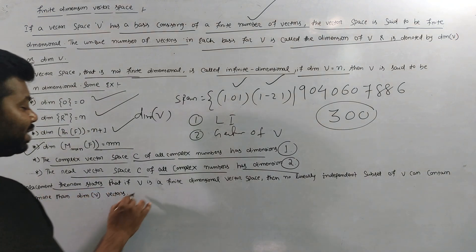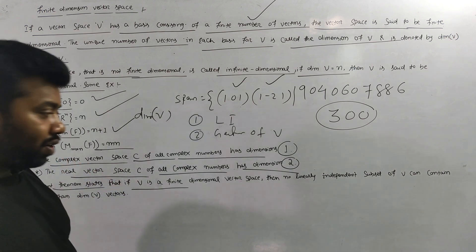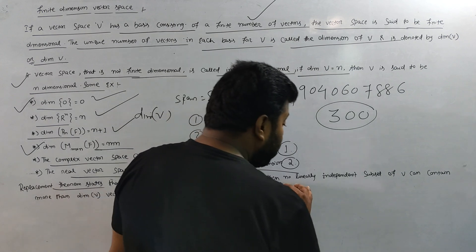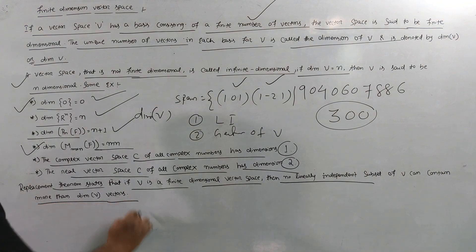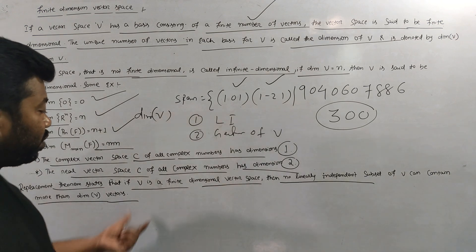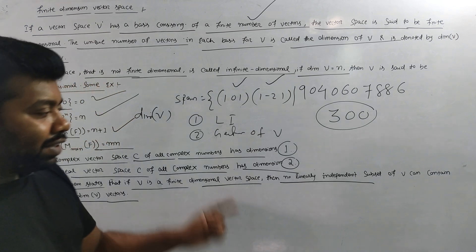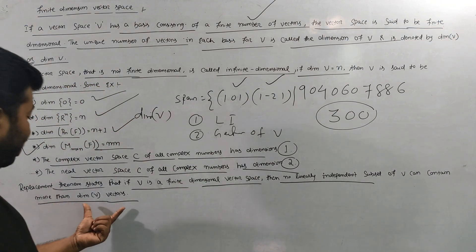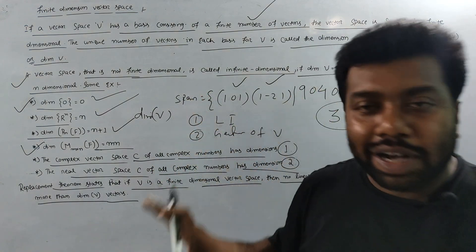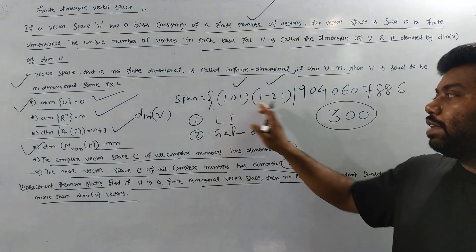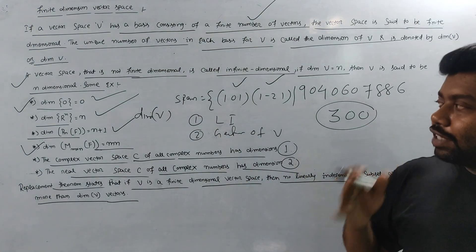The replacement theorem states that if the vector space V is finite dimensional, then no linearly independent subset of V can have more vectors than the dimension of V. So any linearly independent set will have at most n vectors, giving you an n-dimensional vector space.